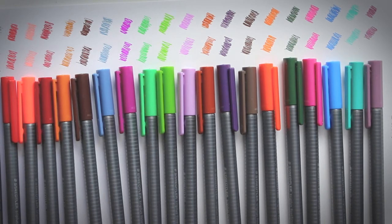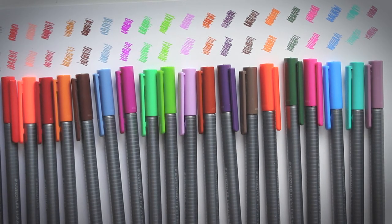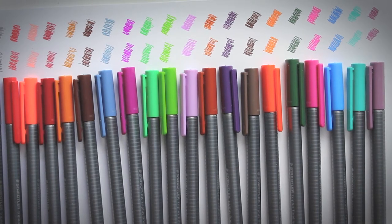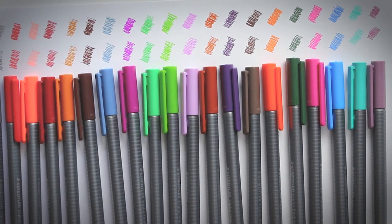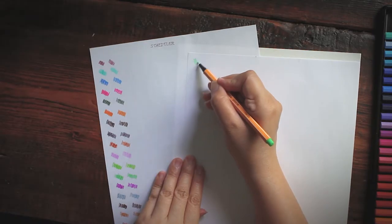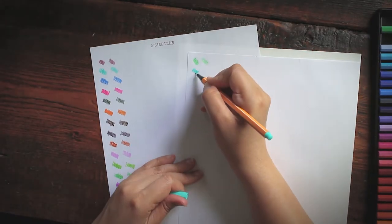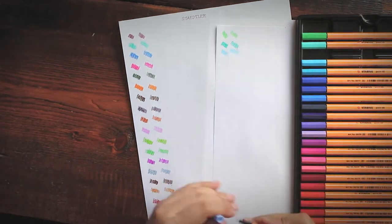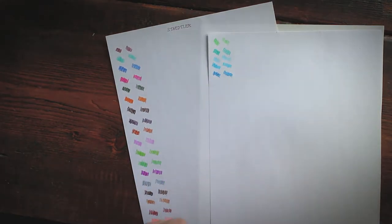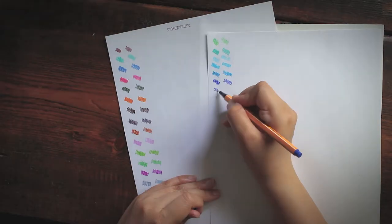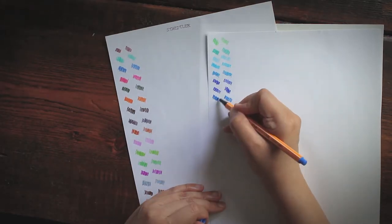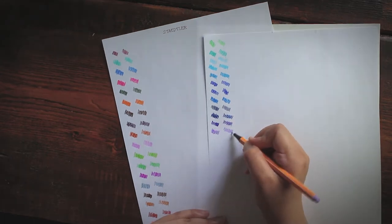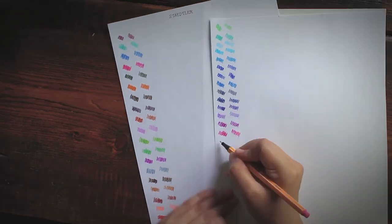And while I'm doing this, I want to say too that Stabilo boasts of long cap-off times, which means that if you accidentally forgot to cover your pen for whatever reason, you don't need to worry about it drying up too quickly. I'm not too sure if there's truth to that claim though because as I'm making this swatch here, I already feel that some of the pens are quite scratchy as if the ink is drying out.